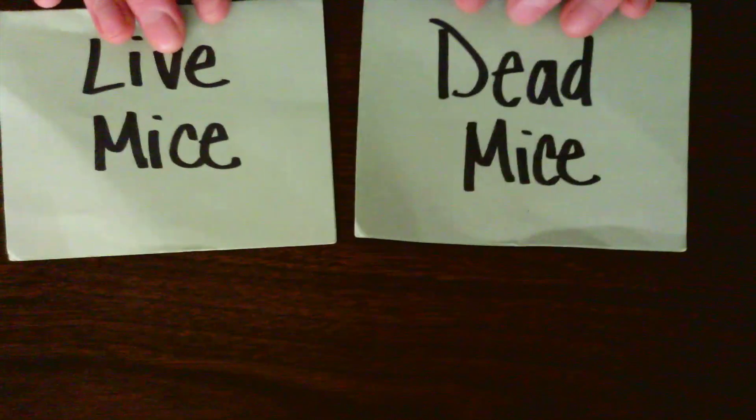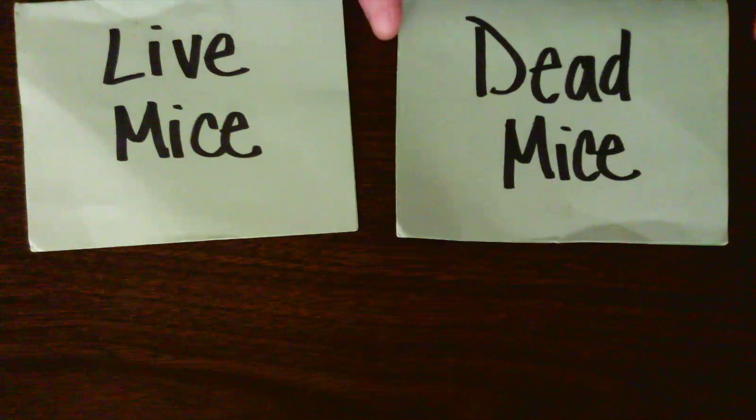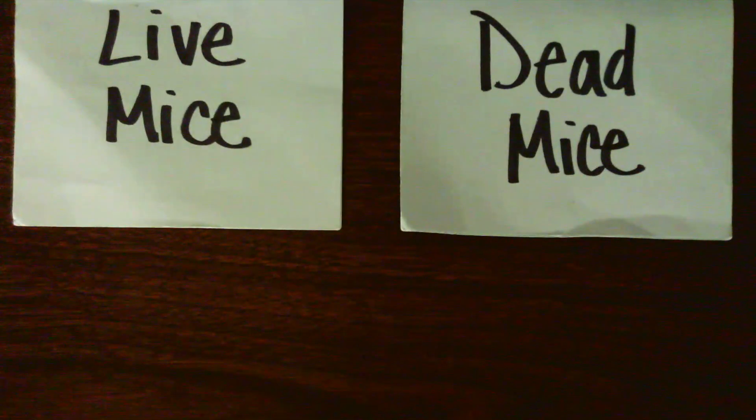There's going to be two different piles: mice that live and mice that die. So on the right hand side, consider it the graveyard. You won't always be able to see these signs, but I wanted to let you know which side they will be on.